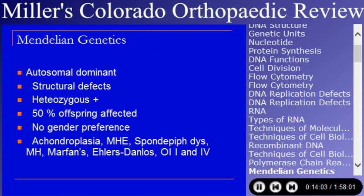Mendelian genetics are asked every year. Autosomal dominant genetic patterns generally create structural defects. A heterozygous individual is positive — only one gene of the two is needed. Half of offspring are affected, and there is no gender preference. Achondroplasia is an autosomal dominant defect. Multiple hereditary exostoses is an autosomal dominant defect that is very commonly asked about. Spondyloepiphyseal dysplasia, Marfan syndrome, Ehlers-Danlos, and some forms of osteogenesis imperfecta are also autosomal dominant.